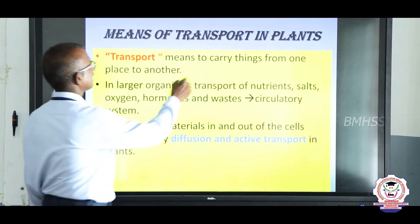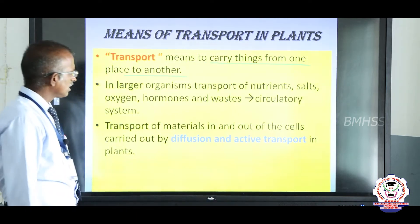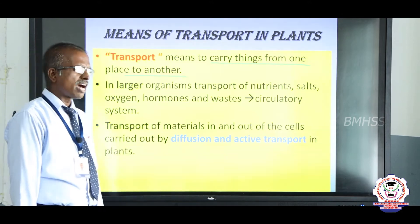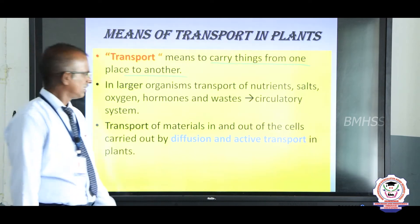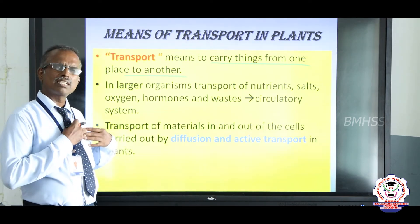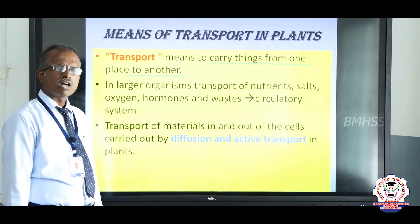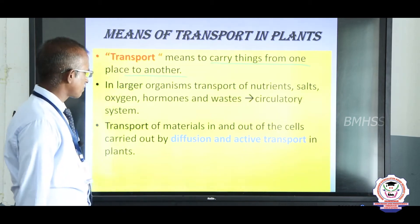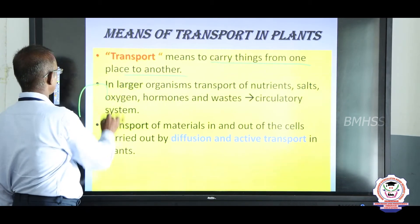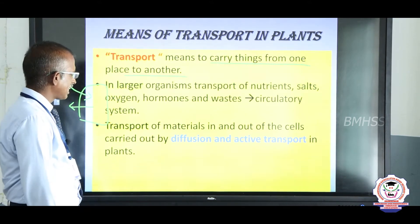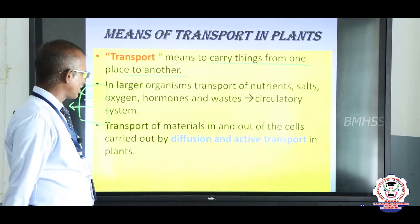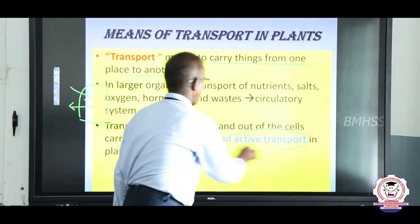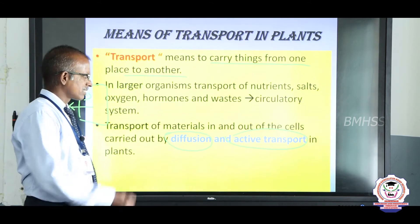Transport in plants means carrying things from one place to another place. In larger organisms like plants, there is no circulatory system, but in higher organisms such as animals, the circulatory system consists of a central pumping organ called the heart, blood vessels — arteries, veins, and capillaries — and a transporting fluid called blood. Transport of materials in and out of cells occurs by diffusion and active transport.